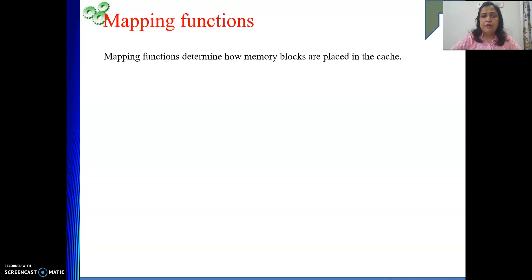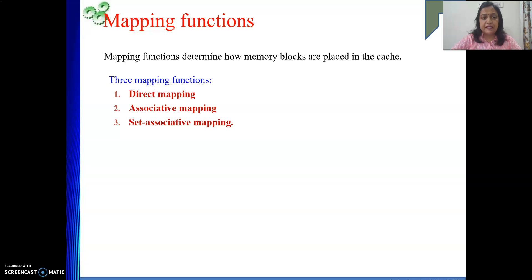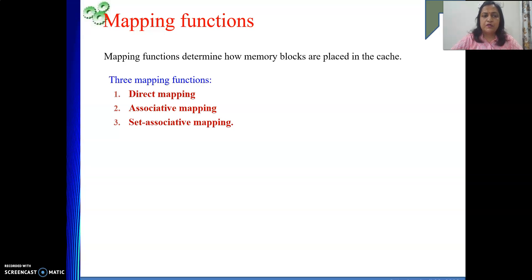Mapping functions determine how memory blocks will be placed in the cache. There are three mapping functions: direct mapping, associative mapping, and set-associative mapping. This is a very important topic in GATE exams as well as university exams, and to understand it properly, previous concepts are required — such as the unit of transfer being a block, and what a hit and miss are.